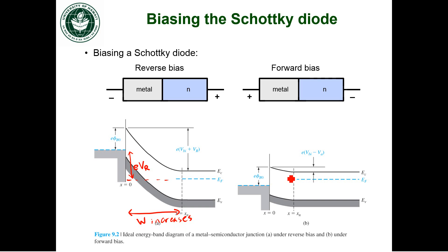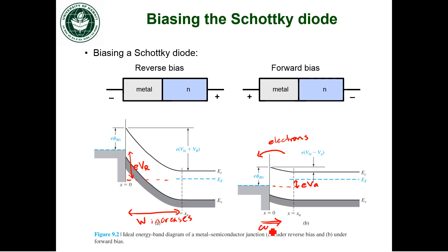Now in forward bias, we're offsetting the Fermi levels but in the other direction. This offset is equal to the amount of forward bias voltage. We lower the potential barrier in the conduction band, so that barrier is VBI minus the forward bias voltage. Since I lowered that potential barrier, I can get more electrons to move over it. So if I have electrons moving from the semiconductor to the metal, that corresponds to a current in the opposite direction. In forward bias, I should have a current pointing from the metal side to the semiconductor side, which is exactly the way that we drew the direction of current on the previous slide.